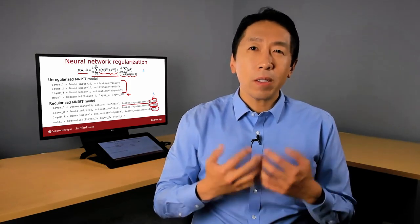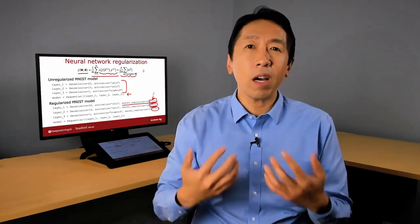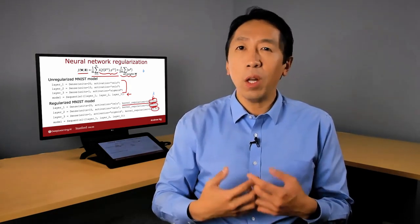And second, so long as your training set isn't too large, then a neural network, especially a large neural network, is often a low bias machine. It just fits very complicated functions very well.